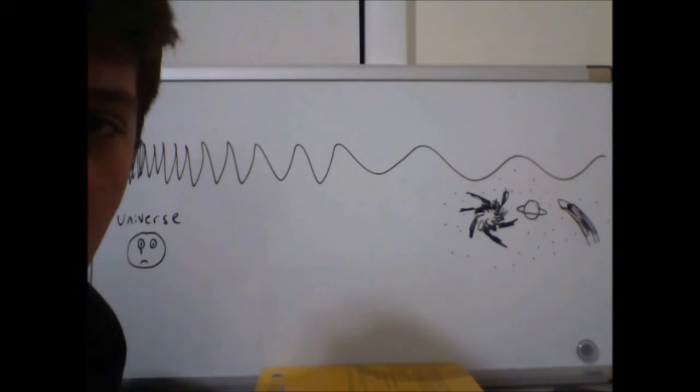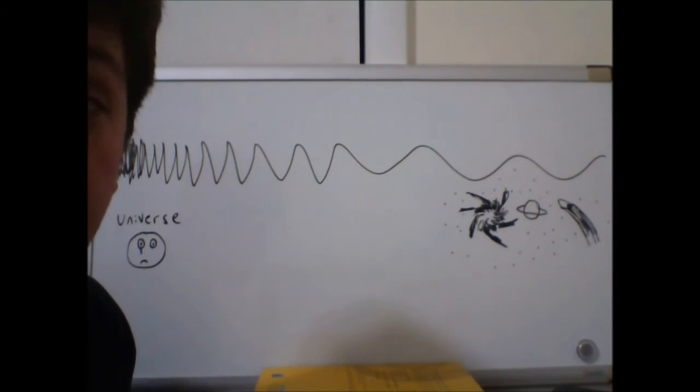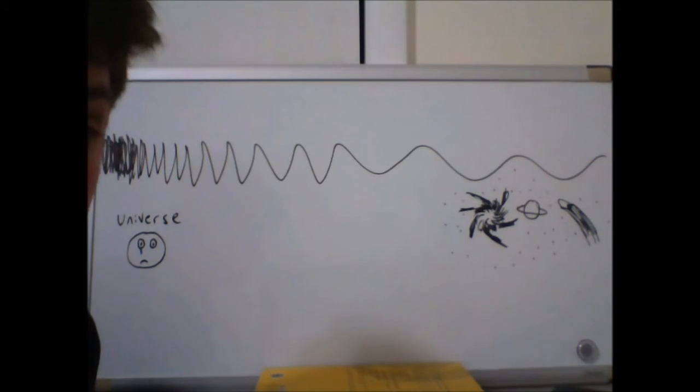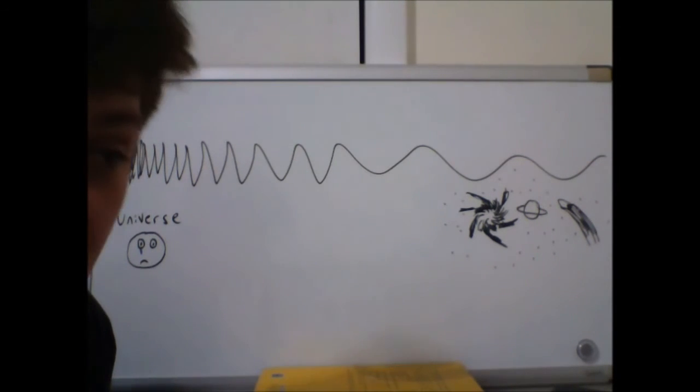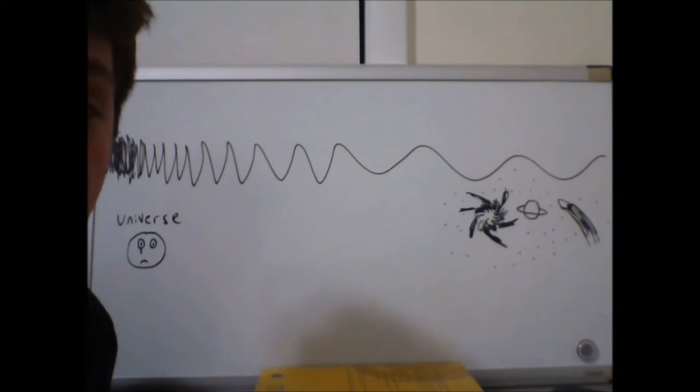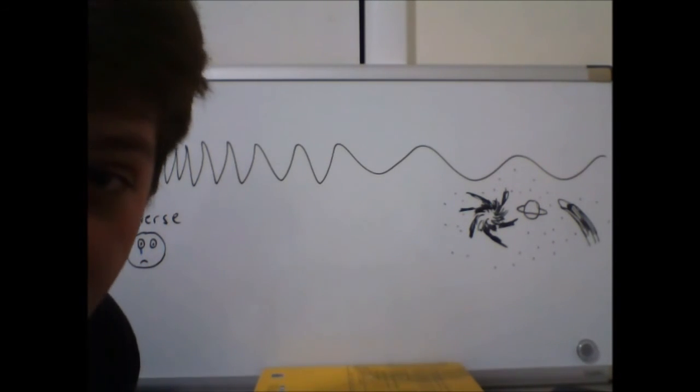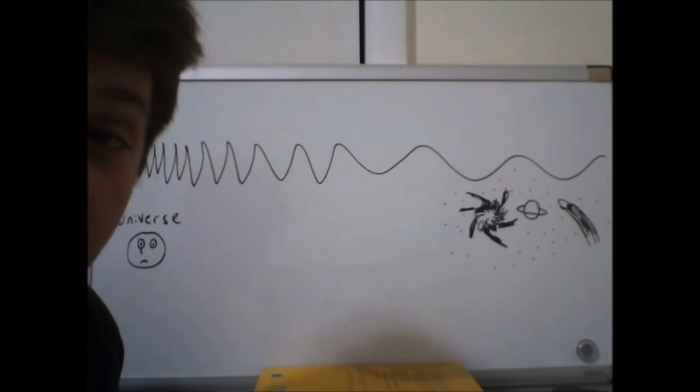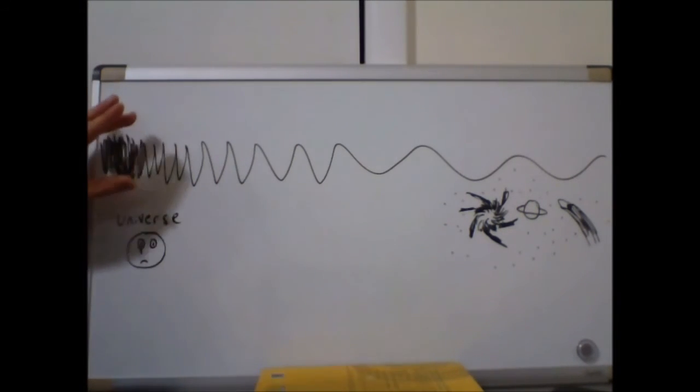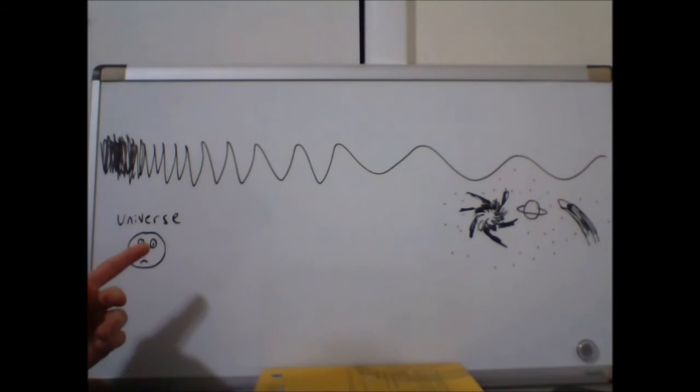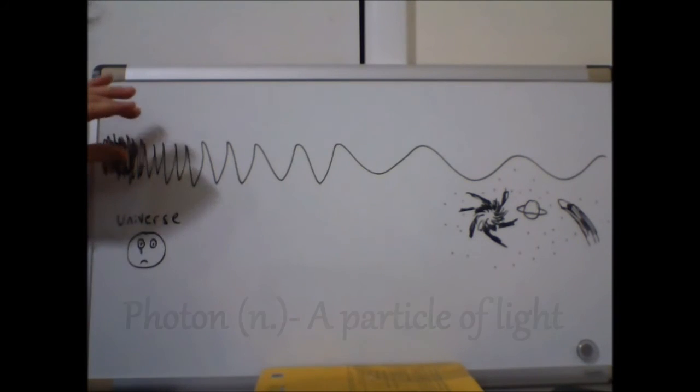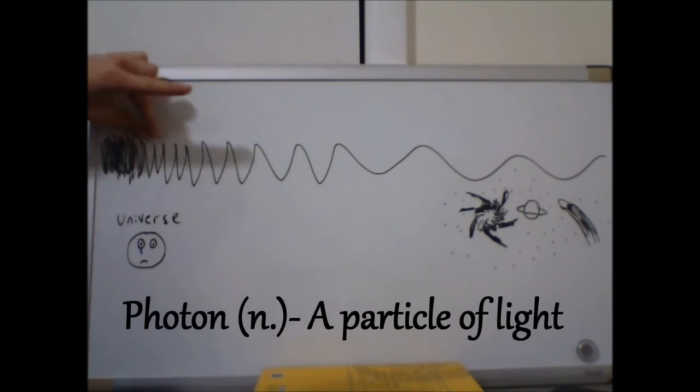No matter where you are in the universe, and no matter which direction you're looking in, you will be bombarded by this low-energy incoming radiation that appears to come out of nowhere. This was very confusing for physicists at first, but today the going explanation is that way back in the day, shortly after the Big Bang, when the universe was the size of a teardrop hanging from Justin Bieber's eye, the universe was filled with high-energy photons with very short wavelengths.